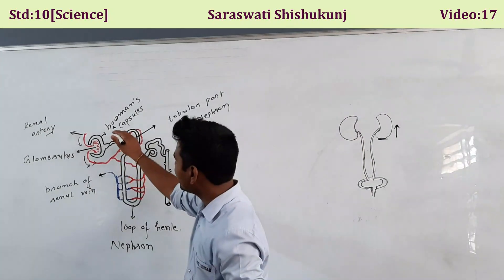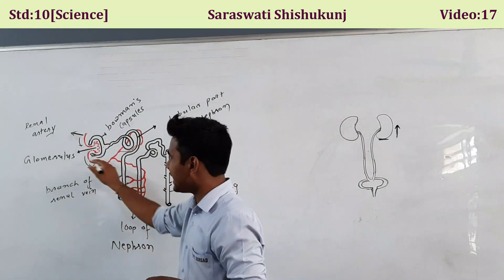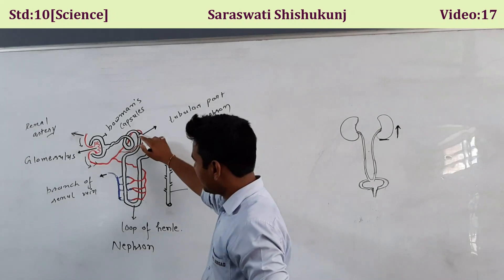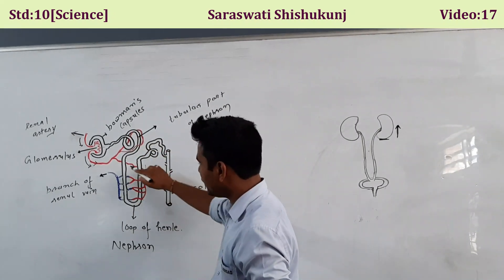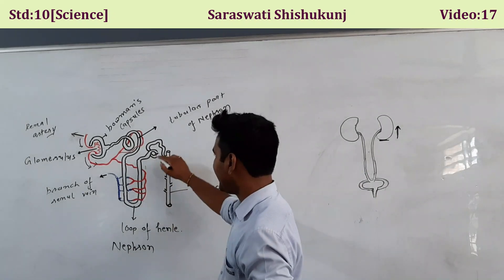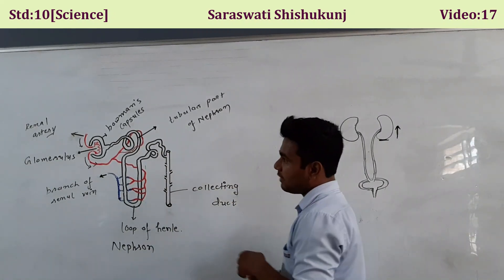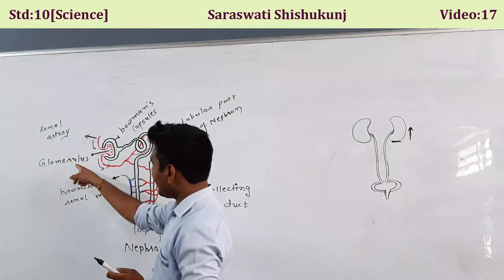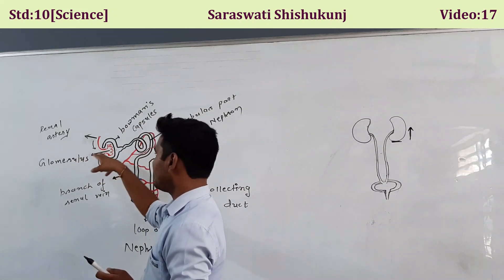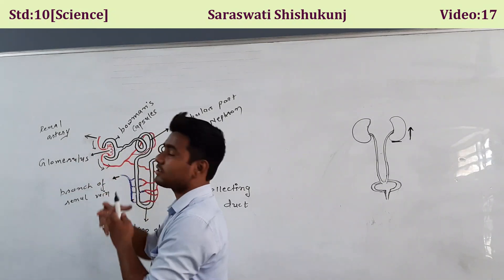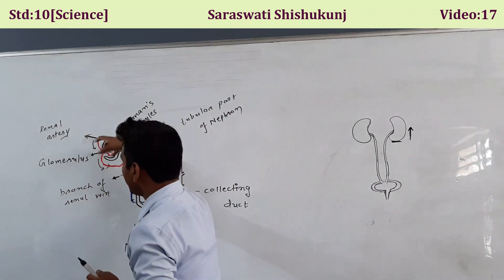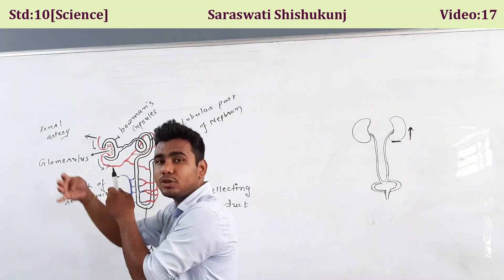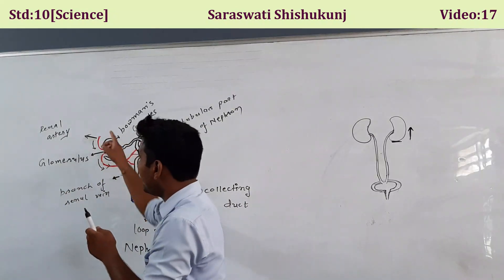From the Bowman's capsule, there is a tubular part of the nephron known as the loop of Henle. That loop of Henle at last ends into collecting ducts. In the Bowman's capsule, the glomerulus is filled with blood capillaries. When blood comes into the Bowman's capsule at high pressure, due to the blood capillaries it gets filtered — this process is called ultrafiltration.